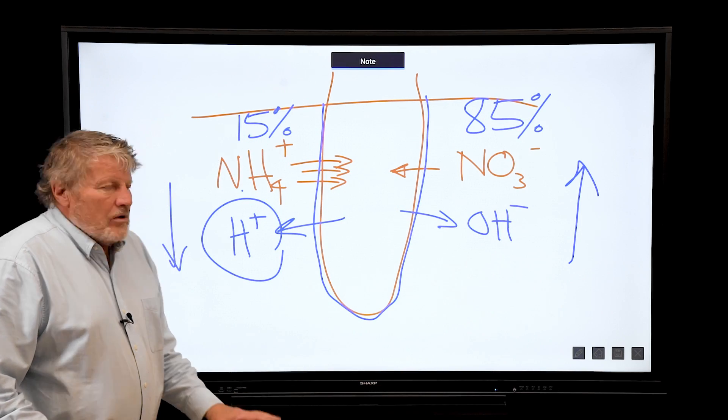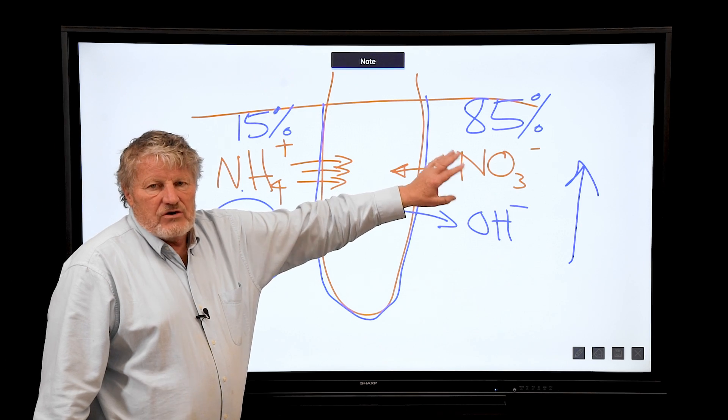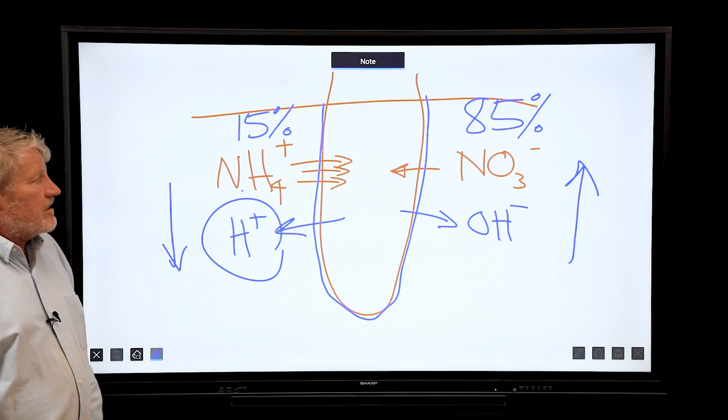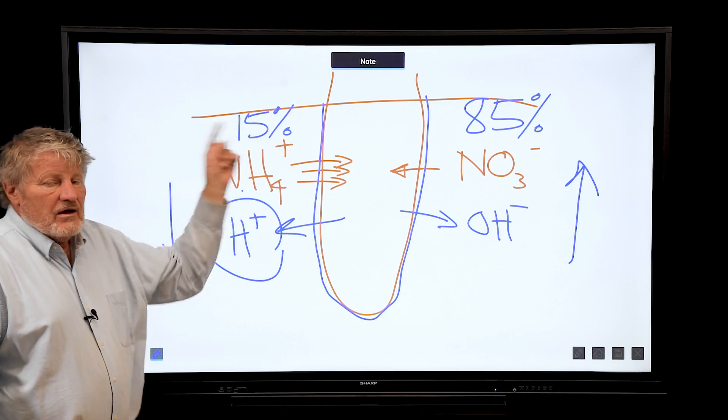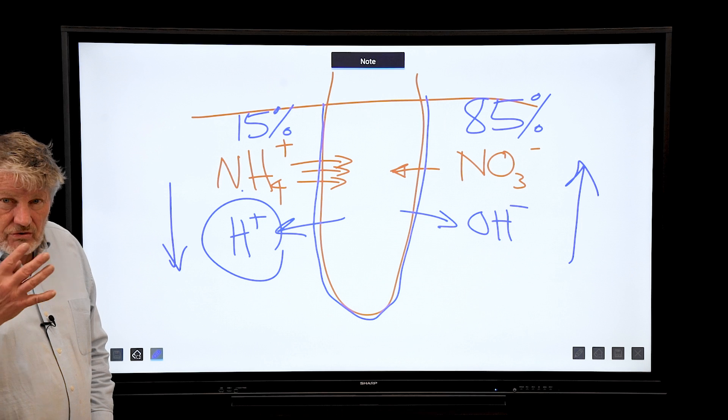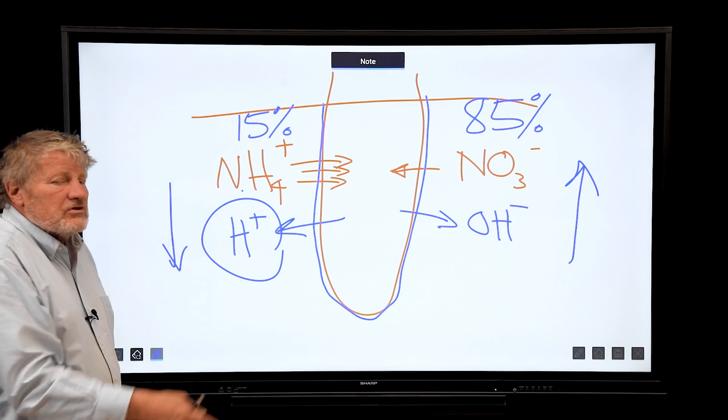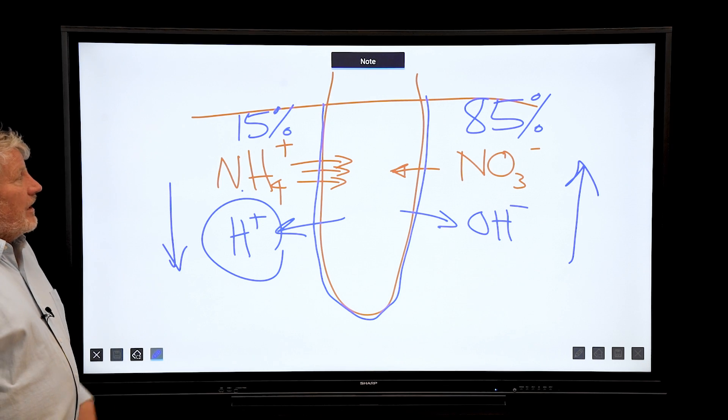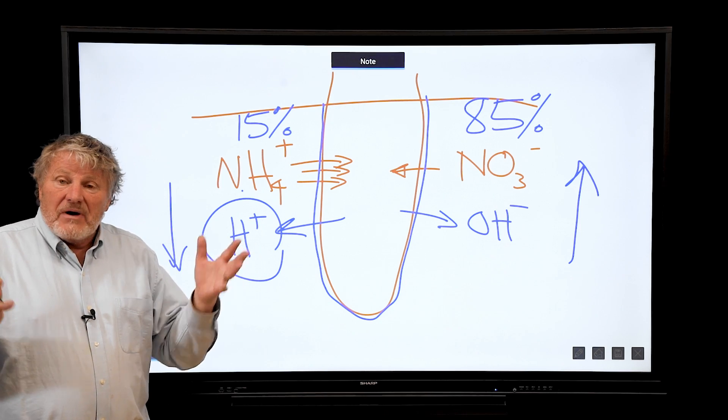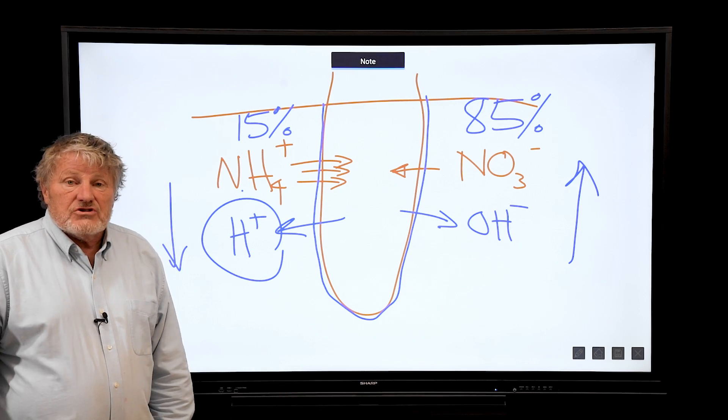If this gets too high, the ammonium just comes in too fast and it drops the pH. So balanced nutrition means you have some of both of these, and in this ratio it keeps the rhizosphere pH about pH 6.